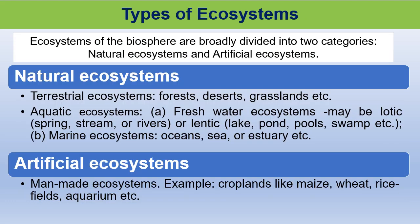Types of ecosystems. Ecosystems of the biosphere are broadly divided into two categories: natural ecosystems and artificial ecosystems. Natural ecosystem consists of two components: terrestrial ecosystems and aquatic ecosystems. Forests, deserts, grasslands, etc. are terrestrial ecosystems. Aquatic ecosystem is further divided into two groups: freshwater ecosystem and marine ecosystem.